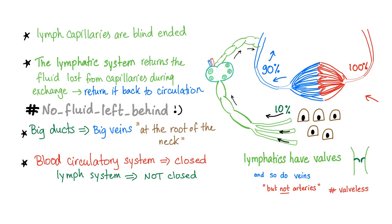Big ducts go to big veins at the root of your neck. The blood circulatory system is a closed system because it starts in the heart and ends in the heart. However, the lymphatic system is not a closed system — it starts in the interstitium and ends in big veins. Also, remember lymphatic vessels have valves like the veins because the pressure is low, but arteries do not need valves because the pressure is high; they can sustain blood movement in only one direction.